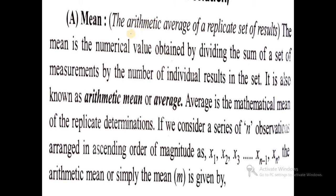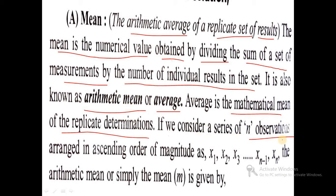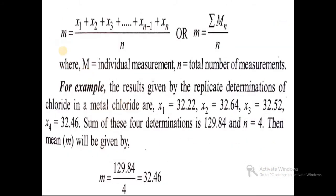Overall, the mean is the arithmetic average of a replicate set of results. The mean is the numerical value obtained by dividing the sum of a set of measurements by the number of individual results in the set. It is also known as the arithmetic mean or average. If we consider a series of n observations arranged in ascending order x1, x2, x3 to xn, then the arithmetic mean m is given by m equals the summation of all values divided by the number of values.